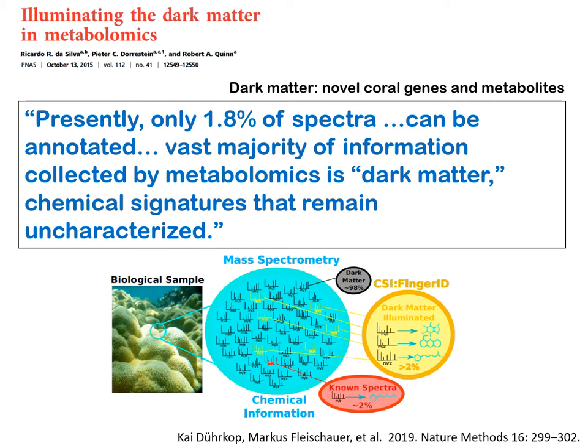Before we get into the metabolomics data, it should be pointed out that there's a lot of darkness associated with corals. That is, there are many novel coral genes for which we have no functions and no annotations. On top of that, the number of known metabolites in marine systems is very small — maybe about two percent of the spectrum can be annotated. So when we look at metabolites from marine systems, we can expect to find many unknown metabolites, many of which may play very important roles in the biology of these organisms but for which we have no known function and therefore no pathway to put them in. Much of the knowledge from untargeted metabolomics is going to be dark by definition.